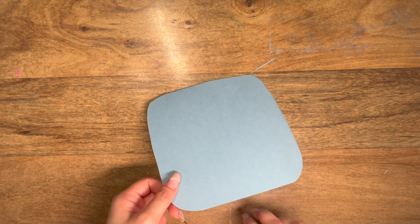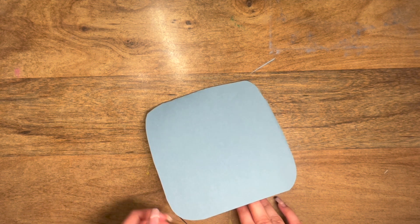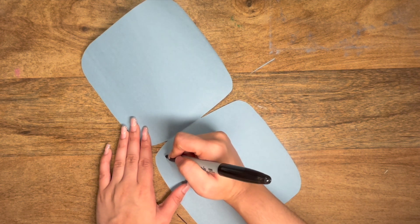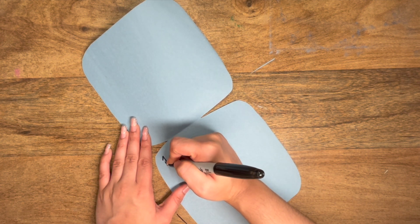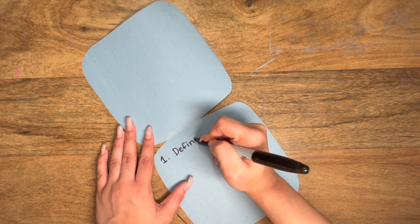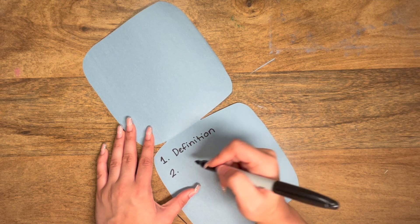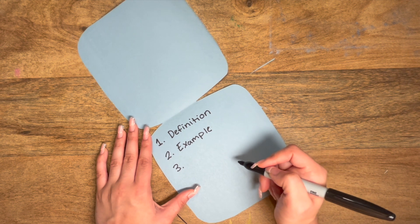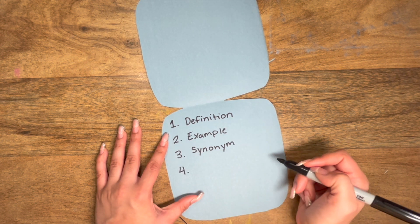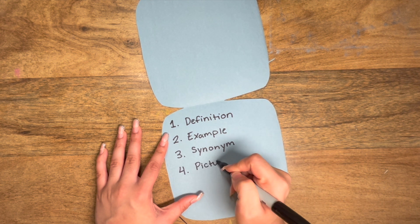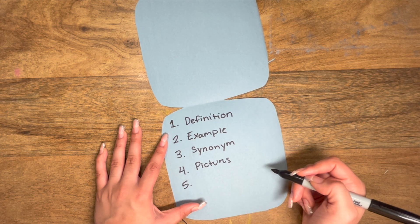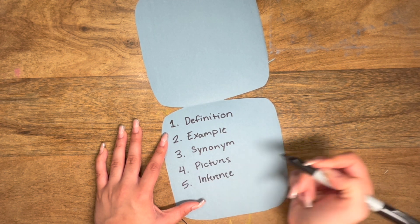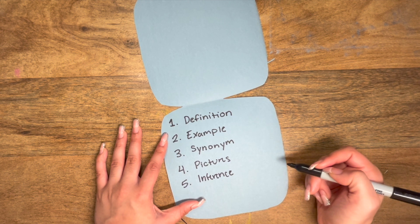We now know that there are five ways that we can identify context in our readings, so let's go ahead and write them down in our cool ice cube infographic. The first one is definition, the second is example, the third is synonym, the fourth is pictures, and the fifth is inference — and in parentheses we can put down the word guessing.